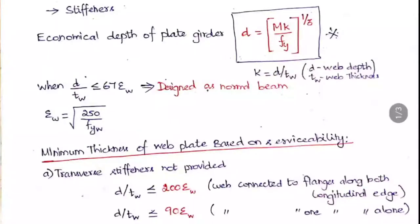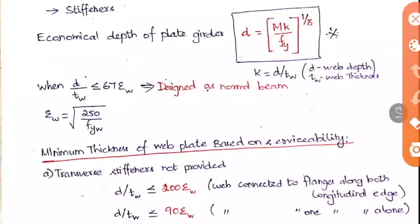Let us see the economical depth of this plate girder. It is given as (M·k / fy)^(1/3), that is the cube root. This formula is very important and has been asked in exam questions. Here M is the moment of the plate girder — normally we consider it as simply supported and take wL²/8 as the moment. k is the ratio d/tw, where d is the web depth and tw is the web thickness, and fy is the yield stress of the steel being used.